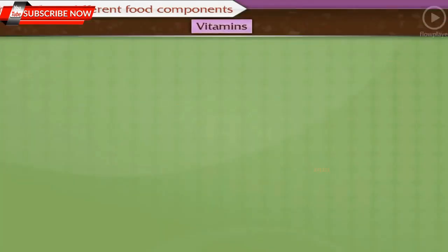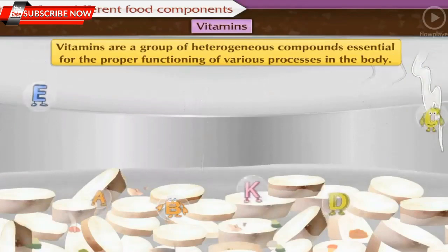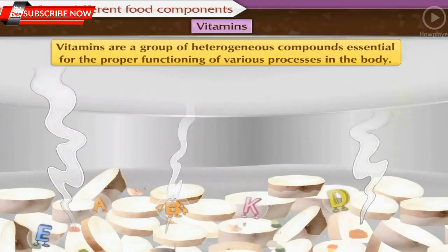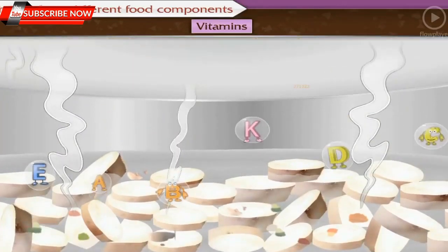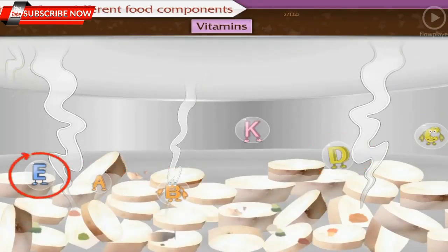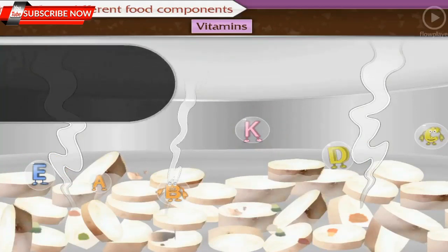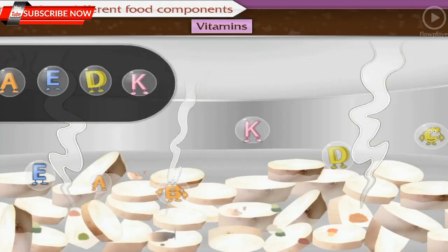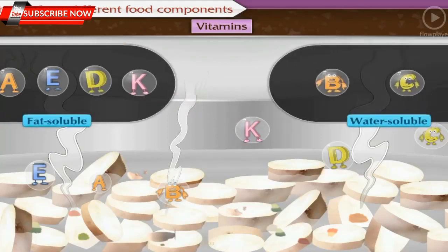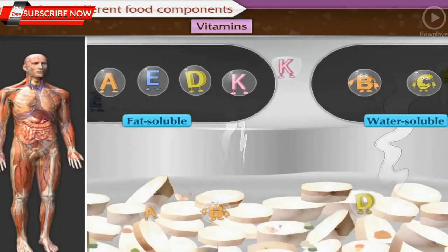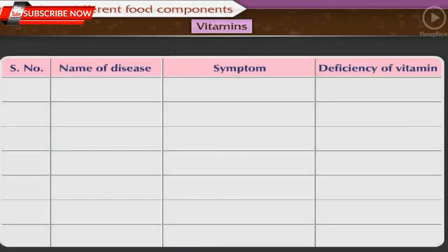Vitamins are a group of heterogeneous compounds essential for the proper functioning of various processes in the body. There are six main types: A, B, C, D, E, and K. Of these, A, D, E, and K are fat-soluble, while vitamins B and C are water-soluble. Deficiency of vitamins causes many diseases.